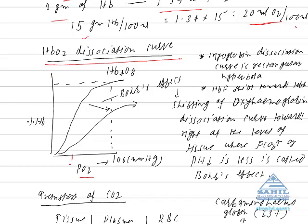For example, if the partial pressure is 20 mmHg, percentage saturation of hemoglobin is correspondingly low. As we further increase partial pressure, saturation rises. At 100 mmHg partial pressure of oxygen, hemoglobin becomes fully saturated — 100% saturated — meaning it has combined with 4 molecules of oxygen.